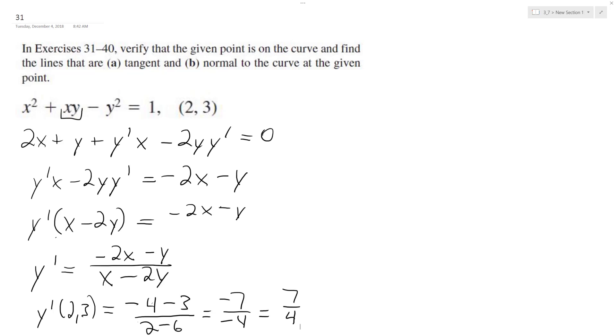Alright, so that's our slope and now we just use the point-slope form: y minus 3. And this is the equation of our tangent line: 7 over 4, x minus 2.